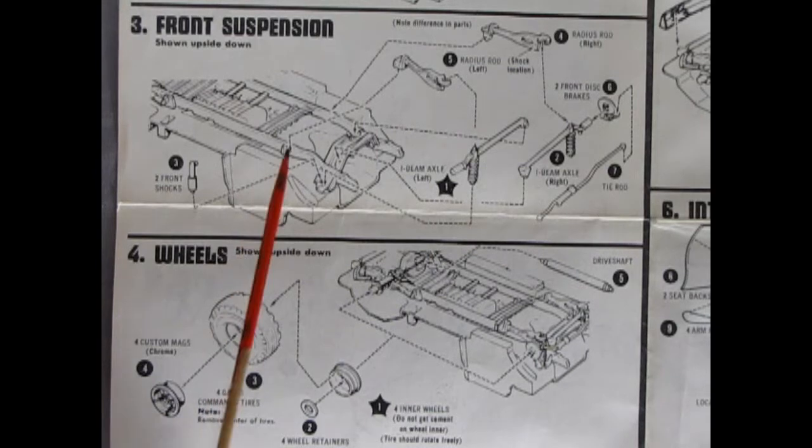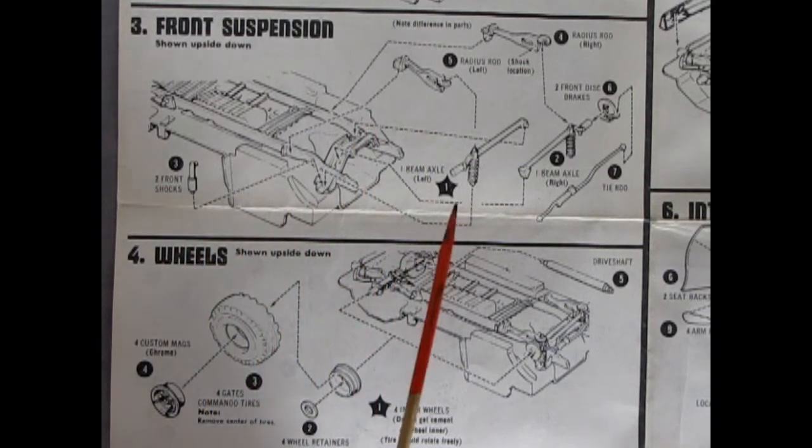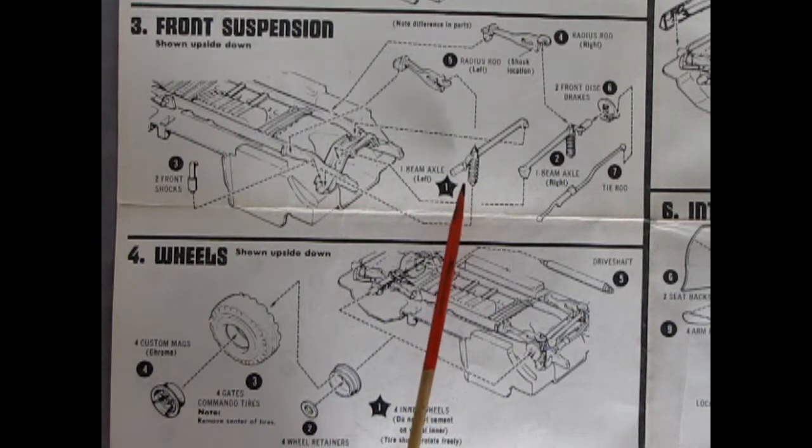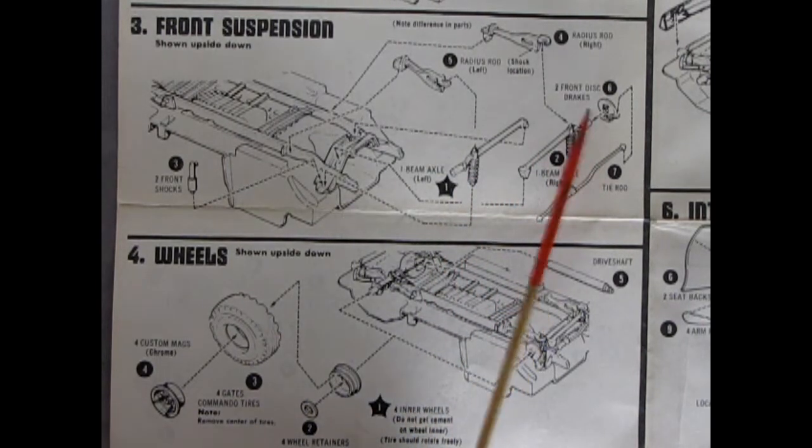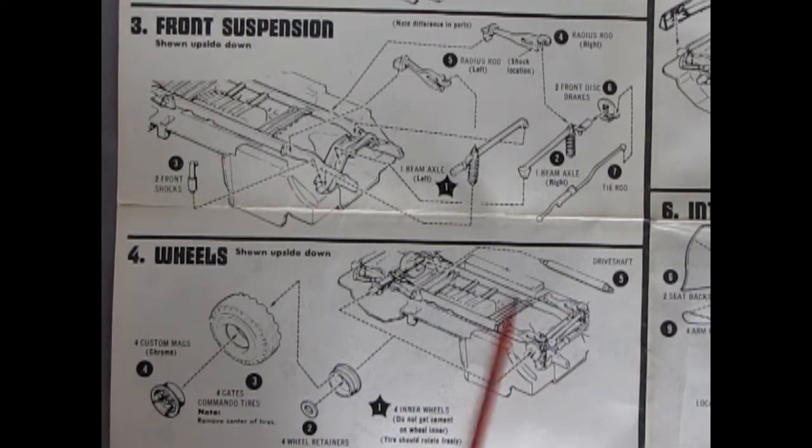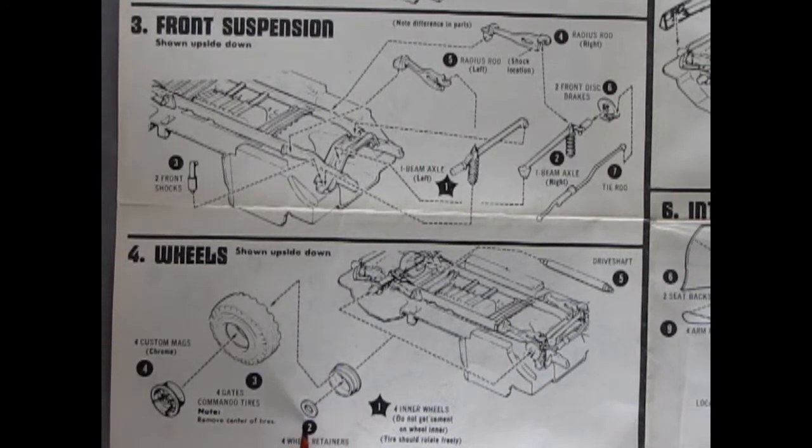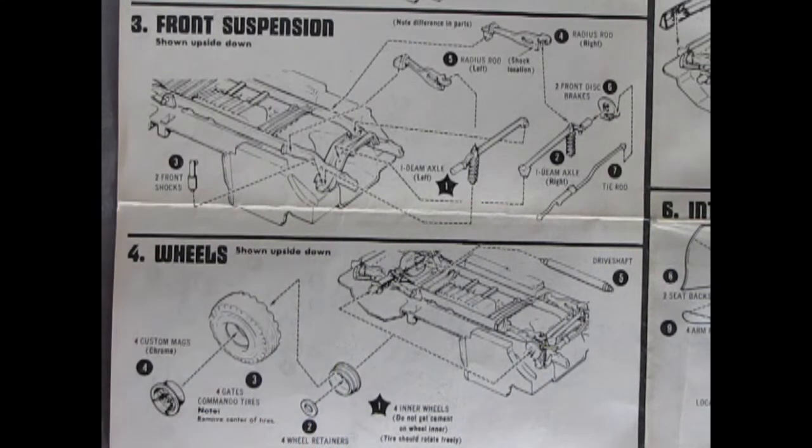We've also got these rear shocks here and then there's some more cross members as well. Then up front we've got these nice radius rods, we've got the front shock absorbers, then we've got our I-beam axles with the springs here. Springs go bouncy bounce. Then there's the front disc brakes and the tie rod. Then if we look under here we've got the drive shaft and then we've got the wheel backs, the retainers, the tires and these cool mag wheels. I always like chasing trucks and vans with big tires.